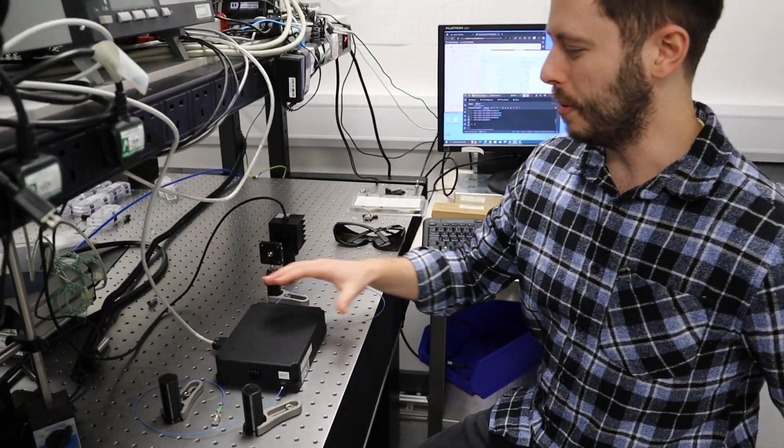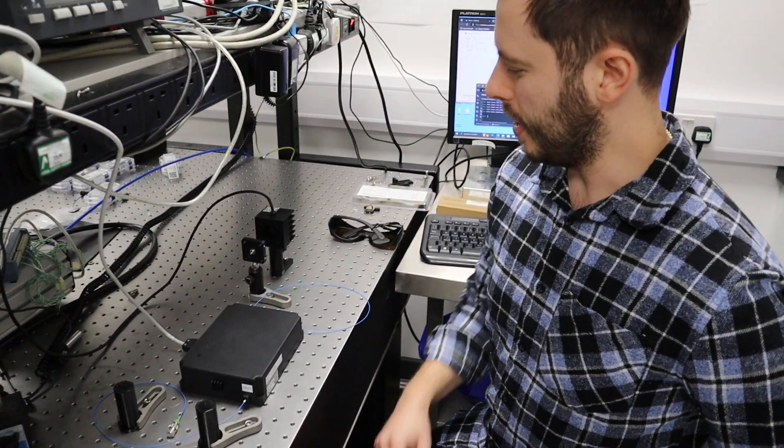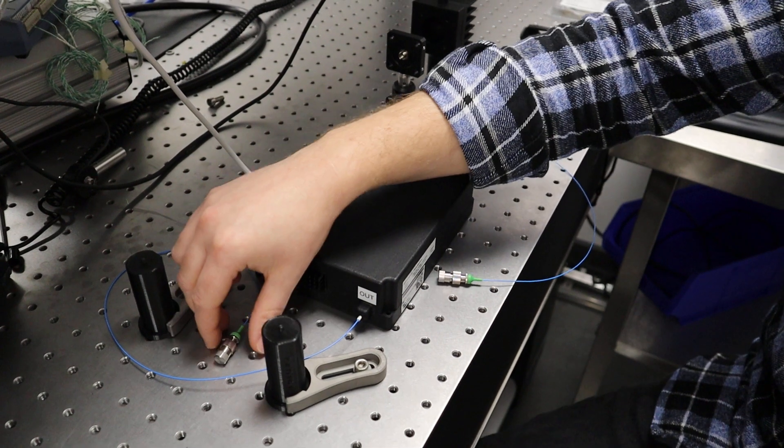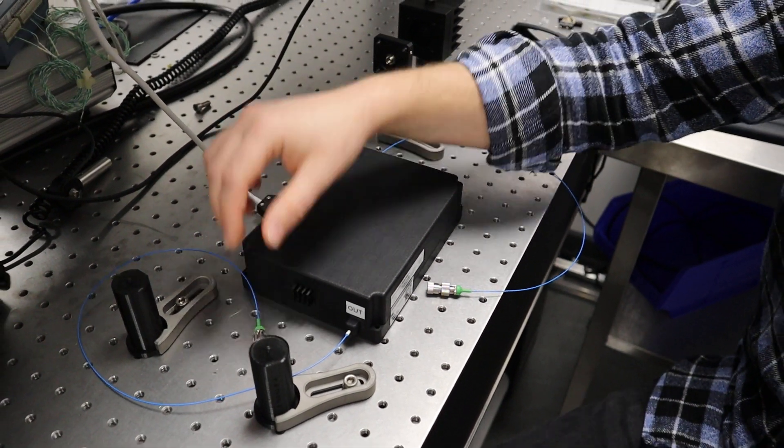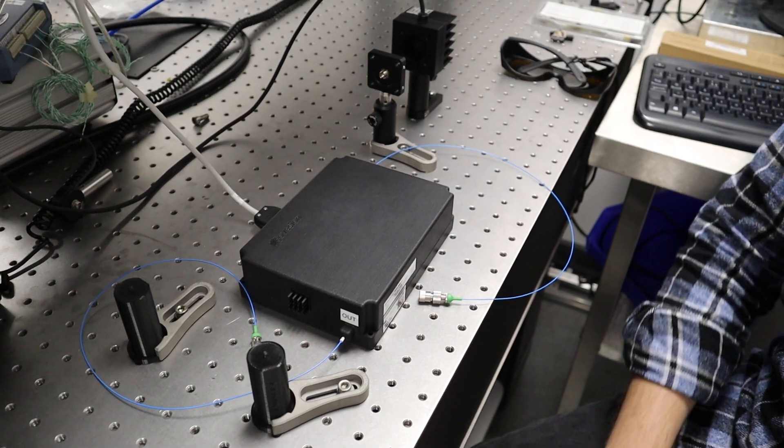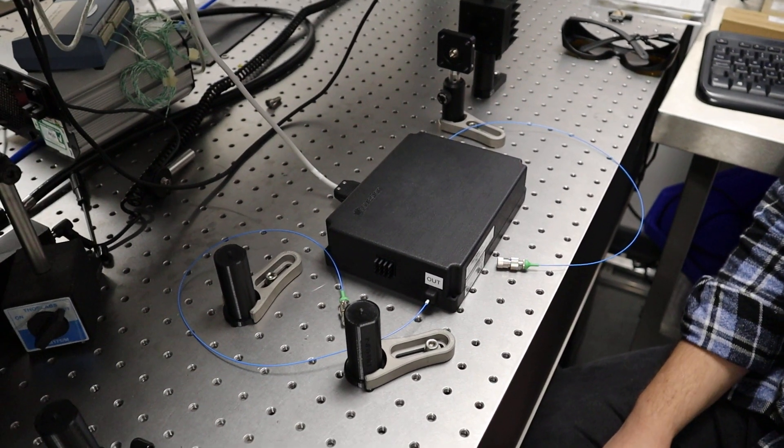So this is the bulk module here. We have an input fibre facet and an output fibre as well. We also have an electrical connection which goes to our OC3 oven controllers.